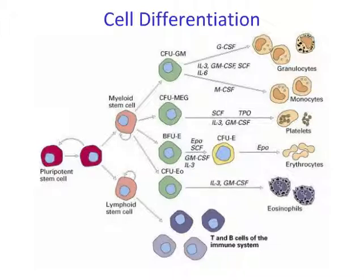Cell differentiation relies on specific stimulation by a variety of growth factors and cytokines. The classic example is the differentiation of bone marrow stem cells during hematopoiesis. Specific colony stimulating factors, or CSFs, are necessary for differentiation of bone marrow stem cells into specialized subpopulations and for maintenance of their viability. Committed progenitor cells of either myeloid or lymphoid stem cell pathways are then stimulated to proliferate by specific growth factors, but progressively lose their capacity for division and develop into terminally differentiated blood cells.